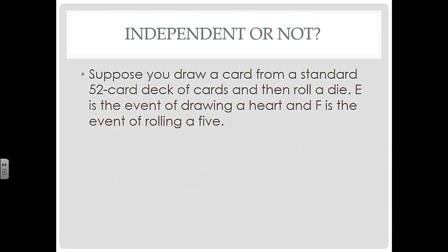Suppose you draw a card from a standard deck of cards and then roll a die. E is the event of drawing a heart. F is the event of rolling a 5. That's independent.